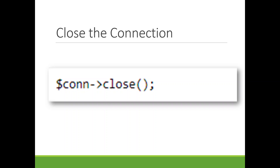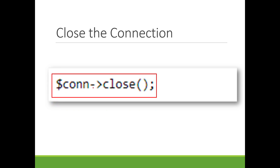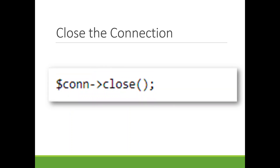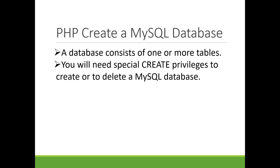After you're done using PHP, it's always important to close the connection. To close the connection, you use the connection variable that you created and call the close function using the arrow operator — that's just a hyphen followed by a greater-than sign. That's how we close the connection at the end of the PHP page.